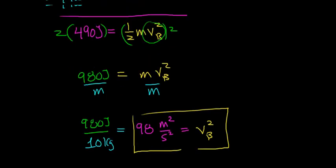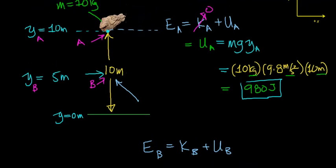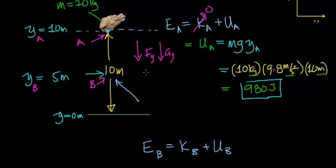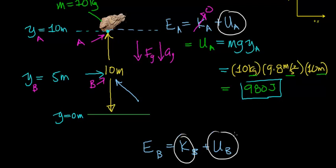Let's summarize what happened during this problem. This rock had all potential energy at the starting point, but as it was released and allowed to fall, the force of gravity accelerated it in the downward direction, speeding it up. What we're seeing is that the potential energy the rock had at the very top is getting converted into both kinetic and potential energy as it falls. The potential energy starts to decrease as the rock gets closer to the ground, while the kinetic energy of the rock increases.